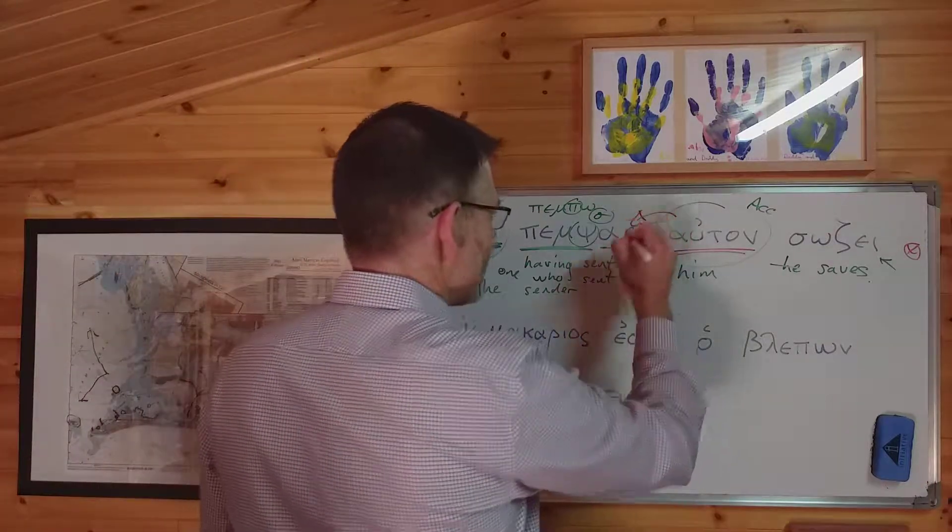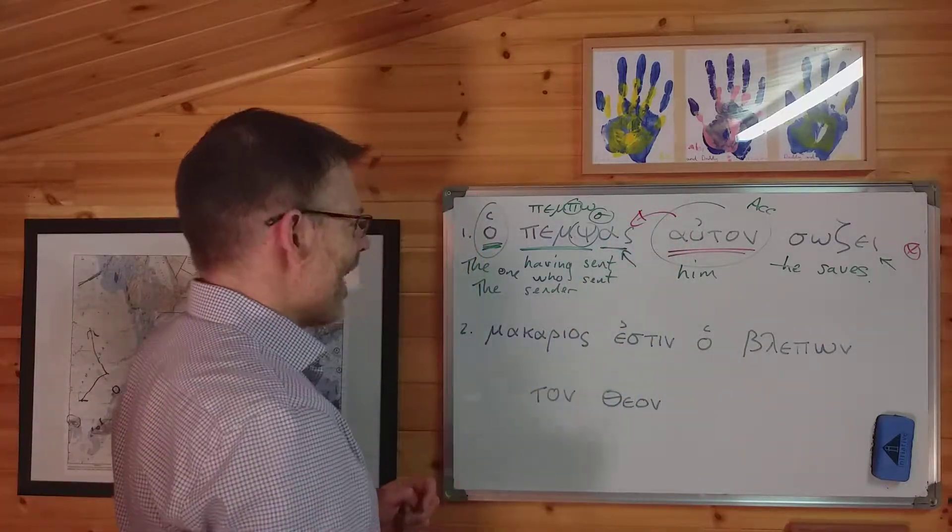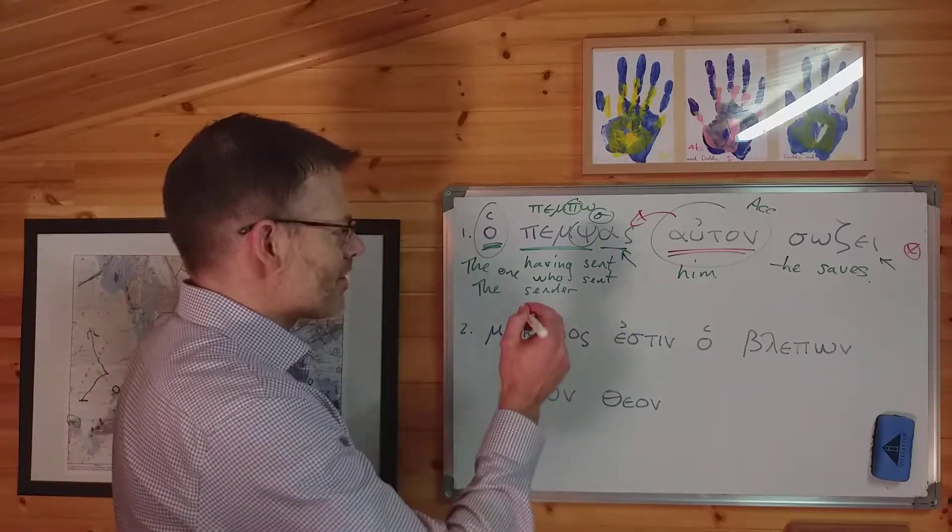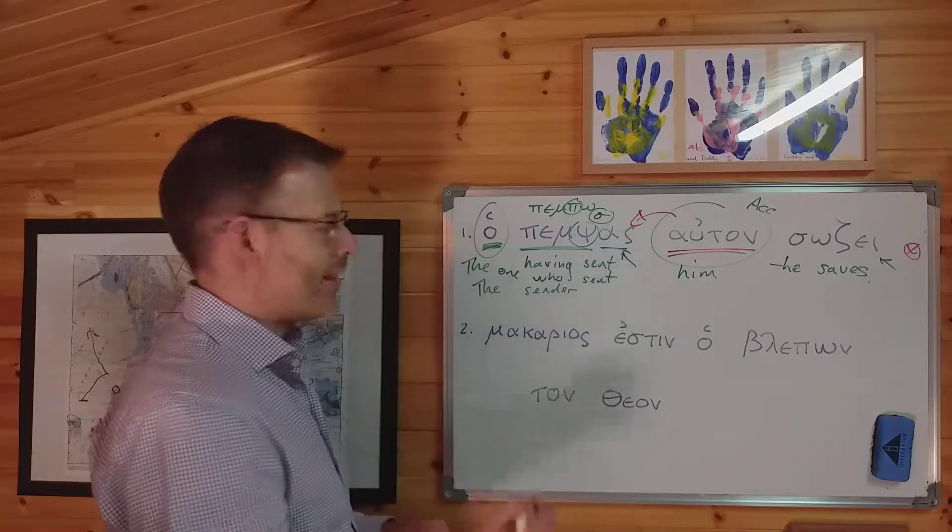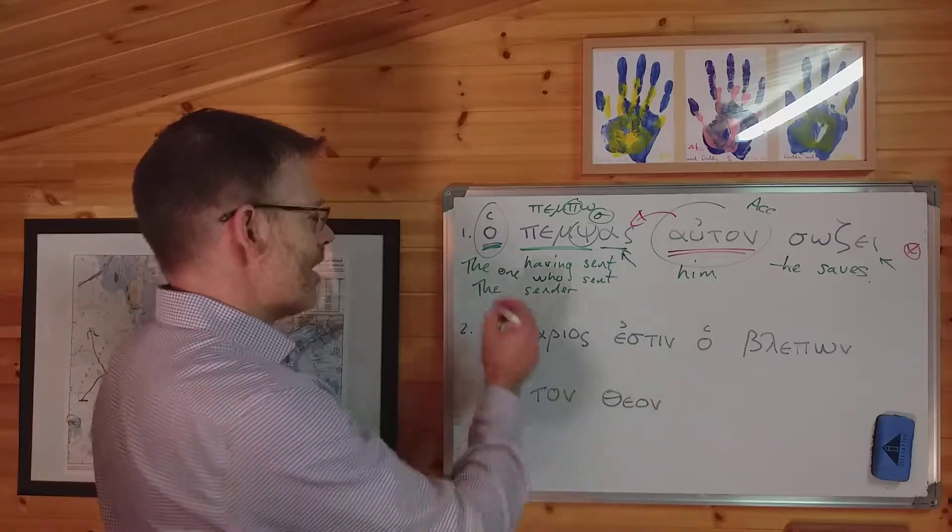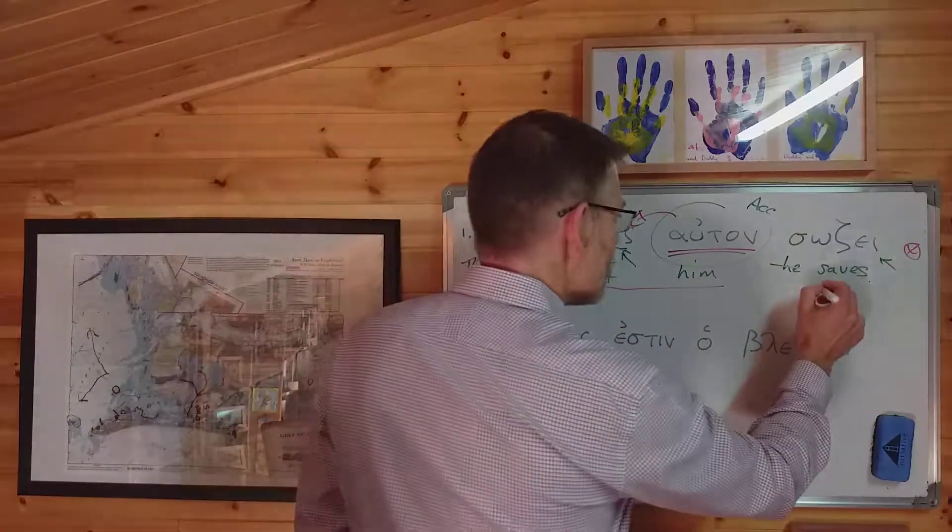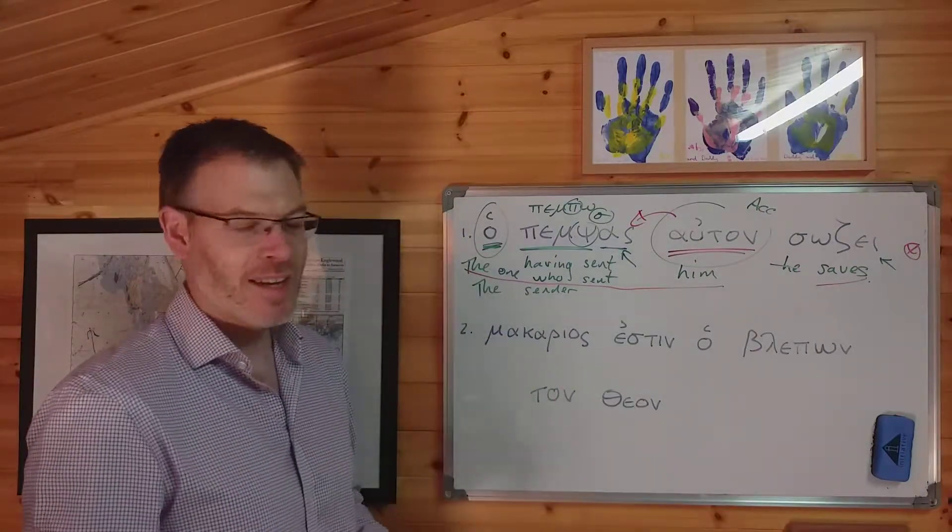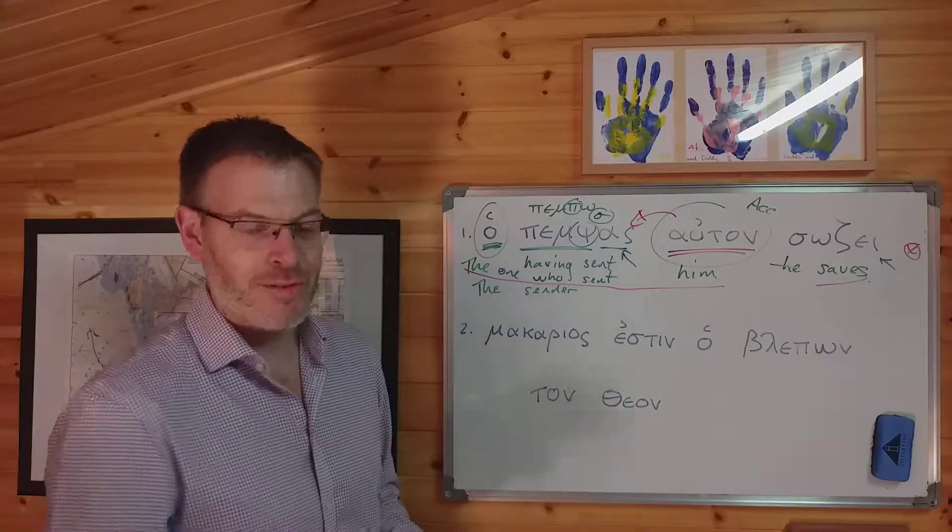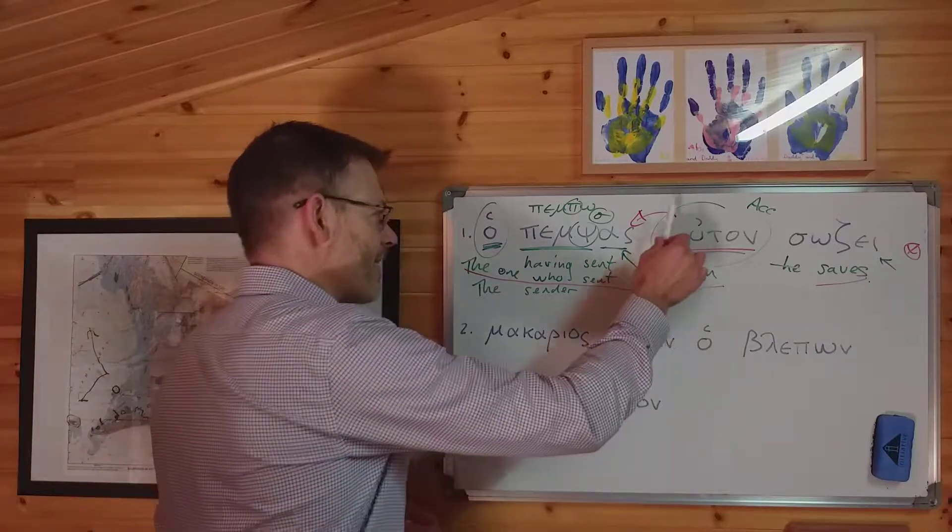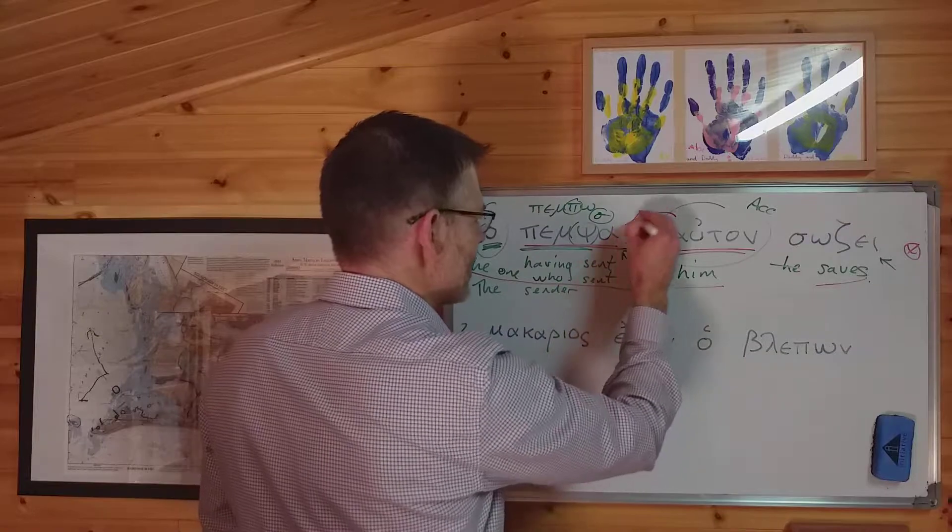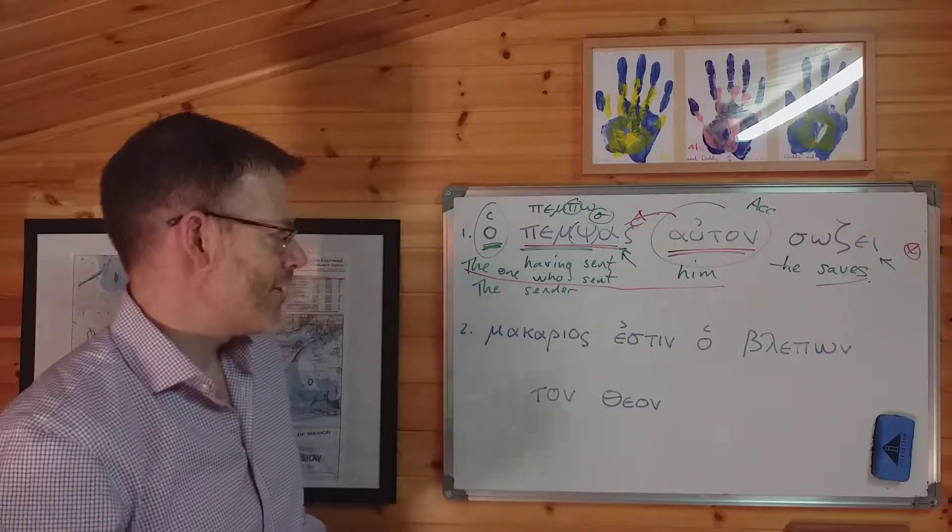And what that does is it provides you an extra little bit of evidence, along with the sense of the sentence, to support the conclusion that really what we've got here is a sentence that says, the one who sent him saves. The one who sent him saves. And that's how you should translate it. That's what Duff's put at the back of the book. It makes more sense. It explains why this is in front of that verb, because it's next to this participle that it's connected to.